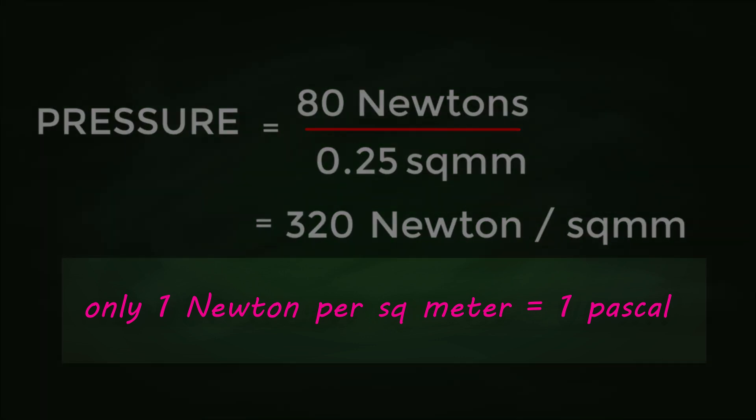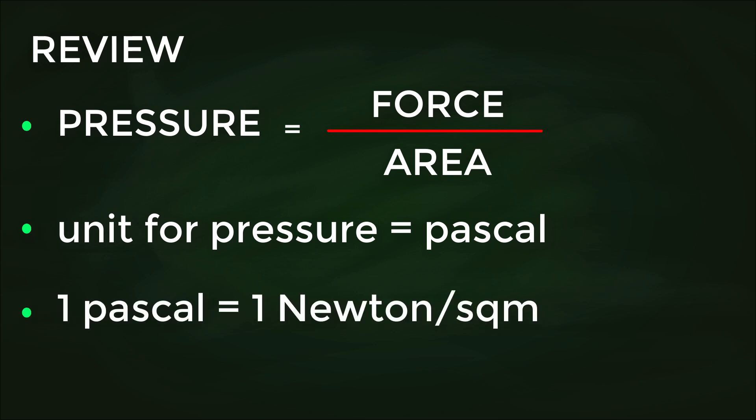In our next couple of videos, we're going to look at a few more practical examples. But for now, just remember that pressure is calculated by dividing force by the area it's being applied to, that the typical unit used to describe pressure is pascal, and that one pascal is the same as one newton per square meter.